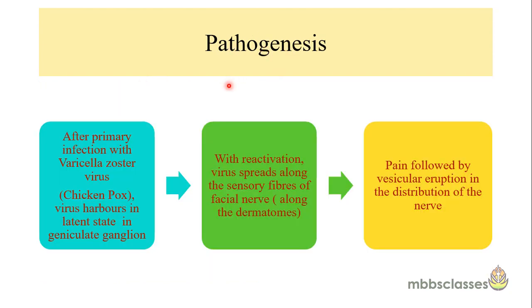Let us see the pathogenesis of the disease. Varicella, or chickenpox, is the manifestation of the virus in a partially immune host. After the primary infection, the virus harbors itself in a latent state in the sensory ganglia. In cases of herpes zoster oticus, the ganglia involved is the geniculate ganglia. This reactivation occurs when there is a decrease in cell-mediated immunity. With reactivation of the virus, it spreads along the sensory fibers of the involved nerve.